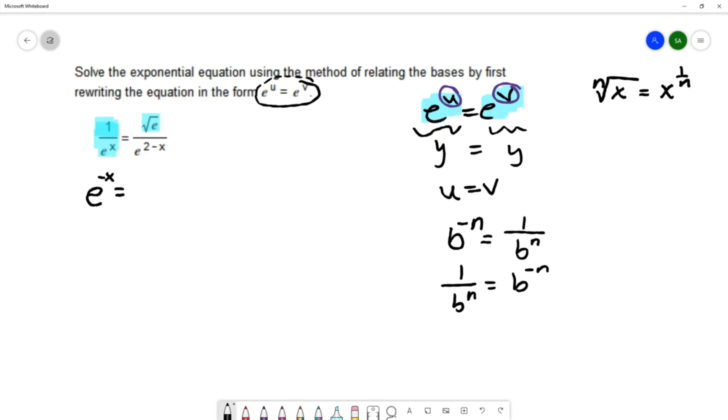So for this example with square root of e we can write that square root of e as e^(1/2). In the denominator I'll leave that alone for the moment.